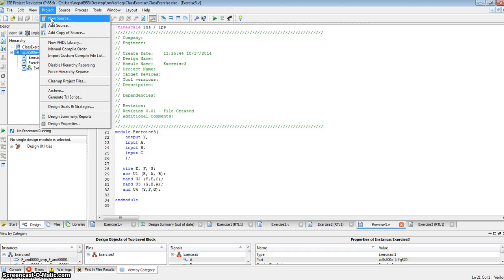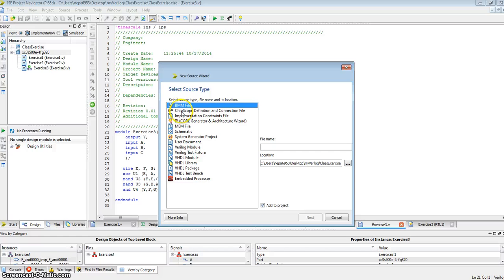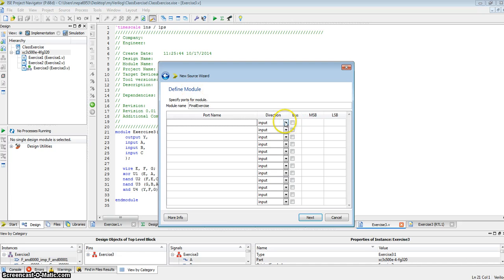So let me do that again. Project, new source, Verilog module, final exercise, add to project. Again, by convention, we'll describe the outputs first. So let me call that out1.